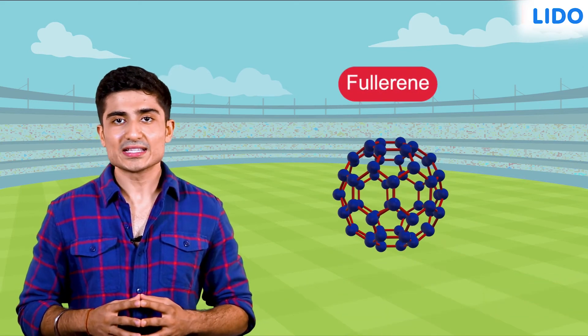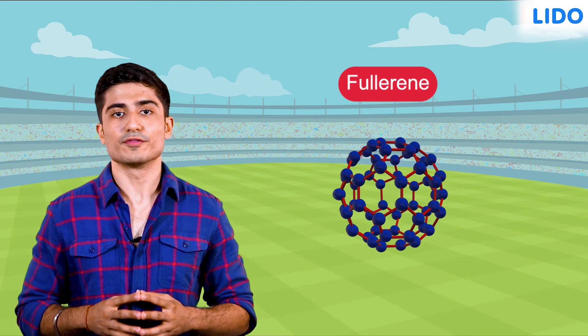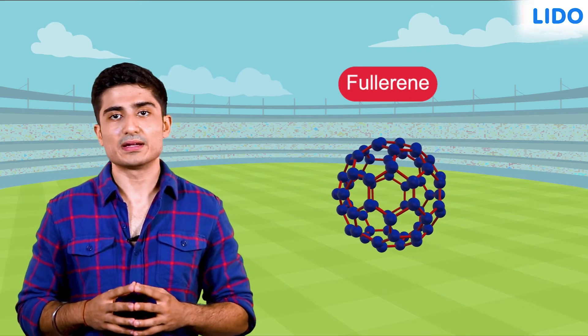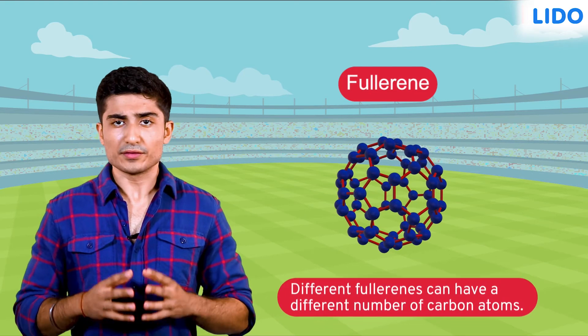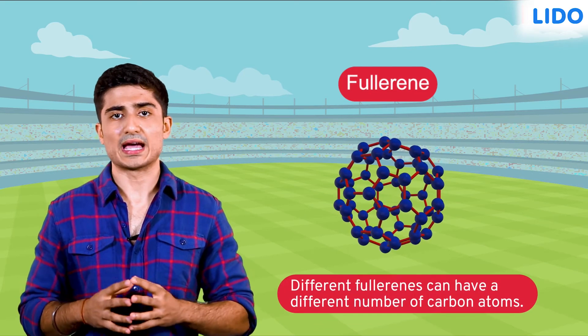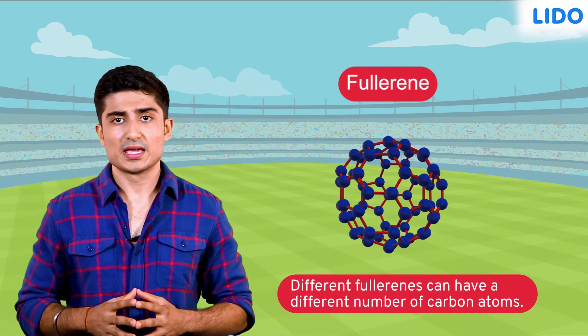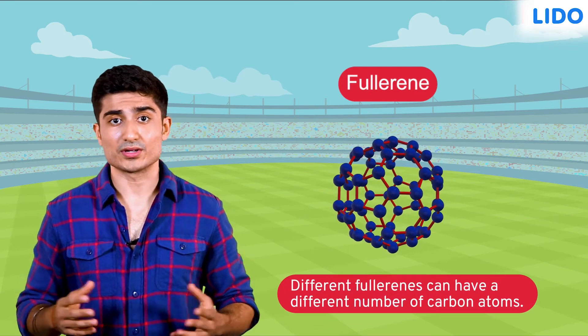The last crystalline allotrope of carbon is called fullerene. Fullerene has carbon atoms held together to form a sphere. Different fullerenes can have different numbers of carbon atoms — some may have 50, some may have 100.